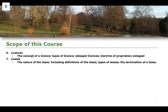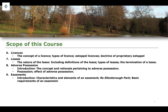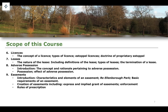The termination of a lease can be done through a number of different methods, the most substantive being forfeiture. Section eight will cover adverse possession — an introduction to the concept and rationale, and then possession and the effect of adverse possession in more detail. Section nine will cover easements — the concept, characteristics, and definition of the easement as laid down in the case of Re Ellenborough Park, the basic requirements for the existence of an easement, express and implied grants, enforcement, and rules of prescription.